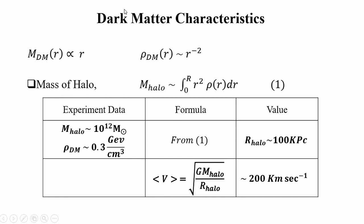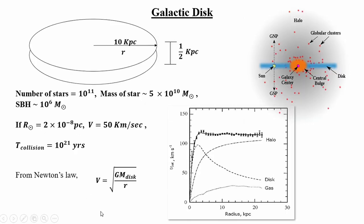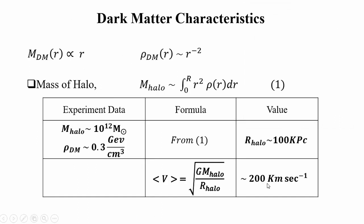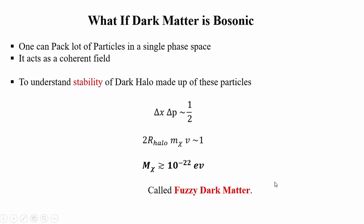Now if we want to know how dark matter particles are moving: from the equation G M_halo over R_halo, the velocity works out to about 200 km/s. This velocity is very small so we can treat dark matter as a non-relativistic particle. However, whenever you calculate Feynman diagrams for dark matter particles, you treat them as Lorentz invariant - all quantum field theory calculations are valid for the Lorentz group. The velocity is less, but it still obeys the symmetry of the Lorentz group, so it is relativistic in formulation but with lesser speed.